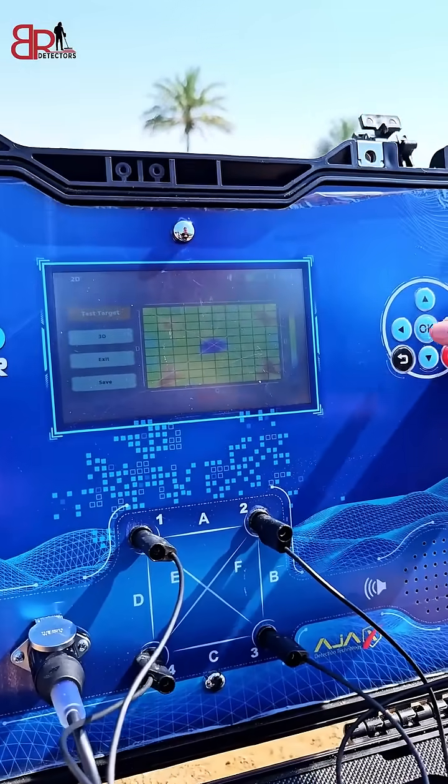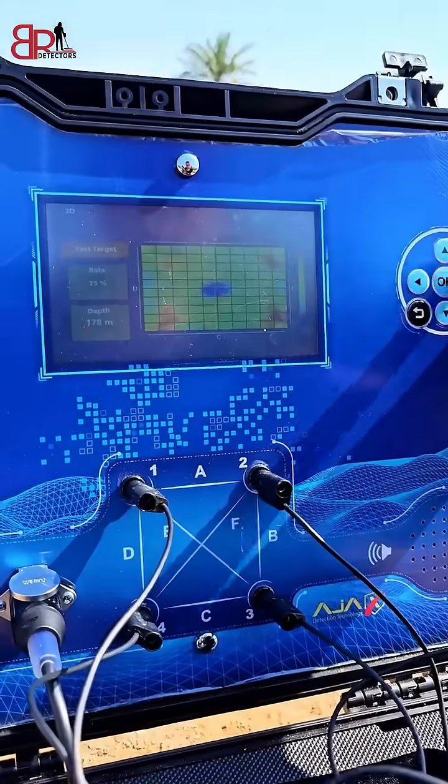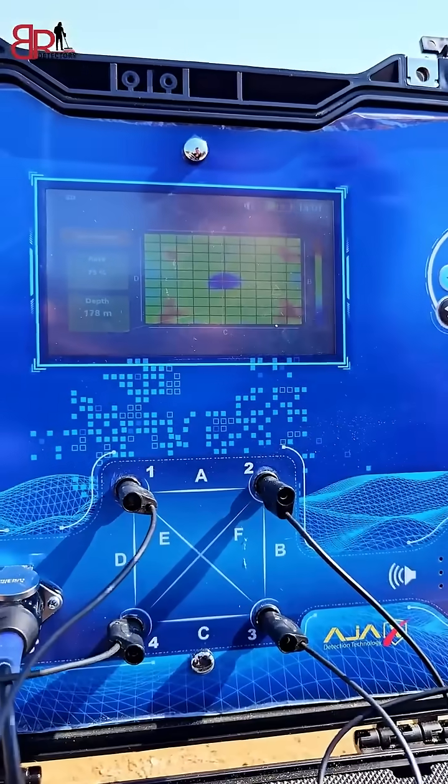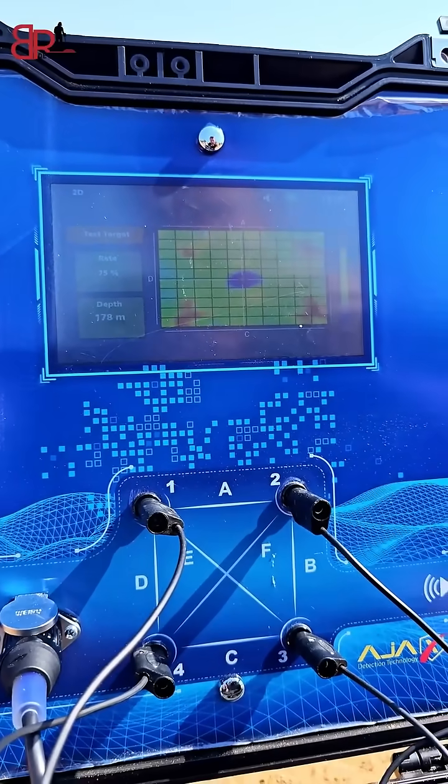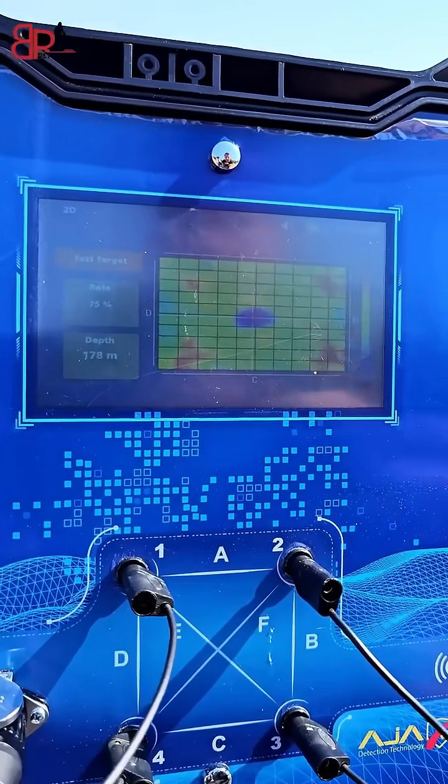We can now test and check the target. We will move the cursor to the point of the borehole. The device tells us that the water content is 75% and the depth is 178 meters underground.